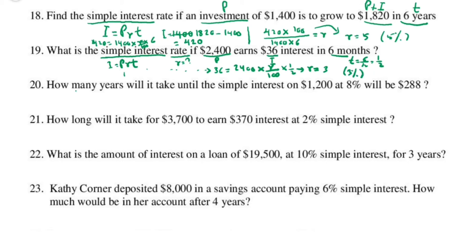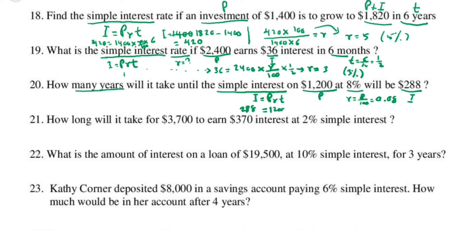Problem 20: how many years will it take? Simple interest: I equals prt. P is 1,200, r is 8% so use 0.08, and interest will be 288. So 288 equals 1,200 times 0.08 times t. What is t?